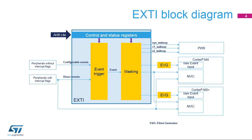This is the block diagram of the Extended Interrupt and Event Controller. Configurable Events are generated by peripherals without interrupt capability, but which are able to issue a pulse. The EXTI Controller provides interrupt detection, masking, and software trigger. Direct Events are generated by peripherals supporting interrupt requests. In this case, the EXTI Controller is used to generate events to the CPU and to request system wake-ups.